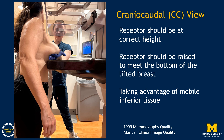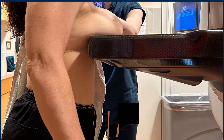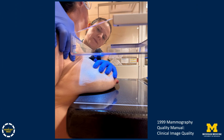The craniocaudal view is the next step. The receptor should be at the correct height, raised to meet the bottom of the elevated or lifted breast, taking advantage of the more mobile tissue of the inferior part of the breast. The breast is placed on the elevated receptor and the technologist pulls with one hand to steady the breast, pulling in as much posterior tissue as possible as the compression plate comes down. At the same time, she reaches behind the patient and helps pull and relax the shoulder on the same side as the breast being imaged.